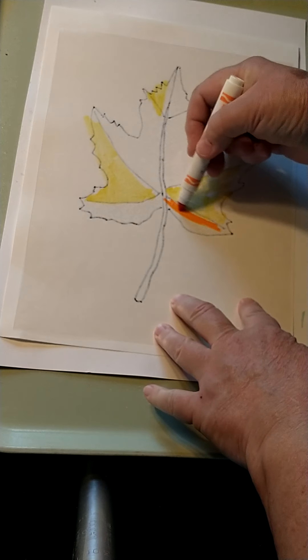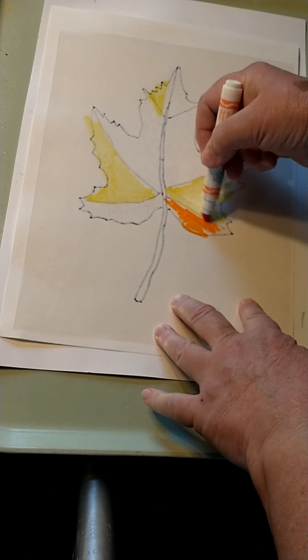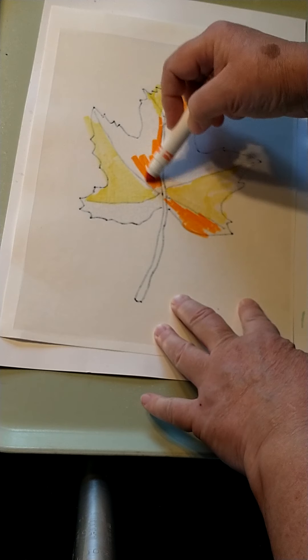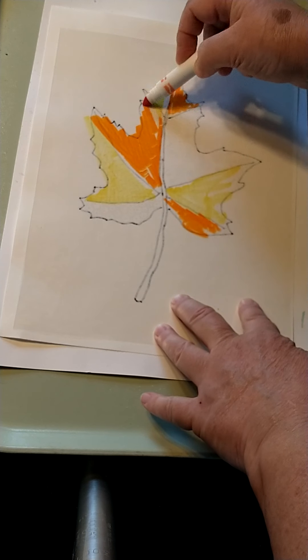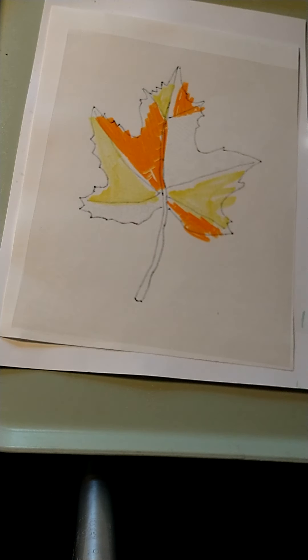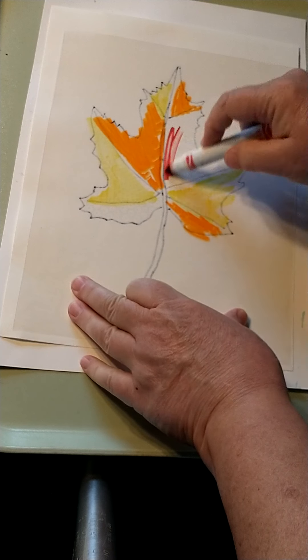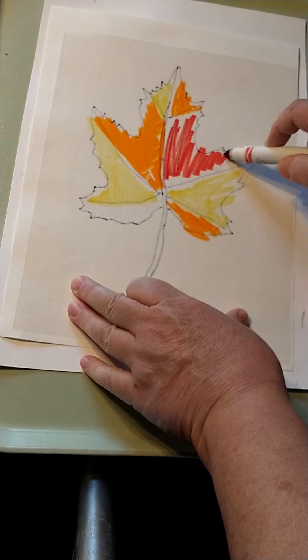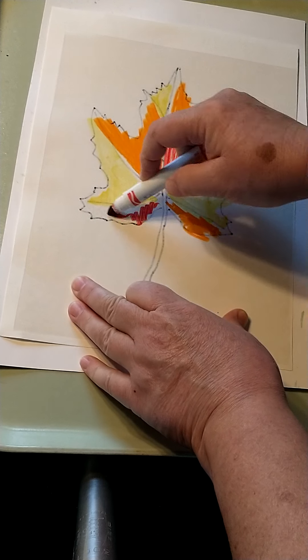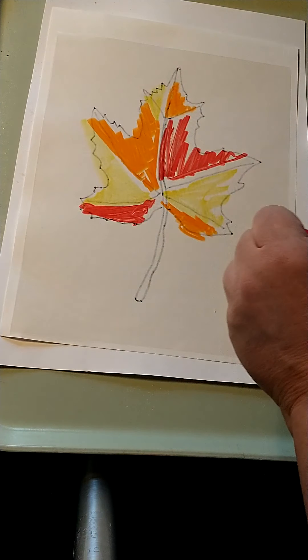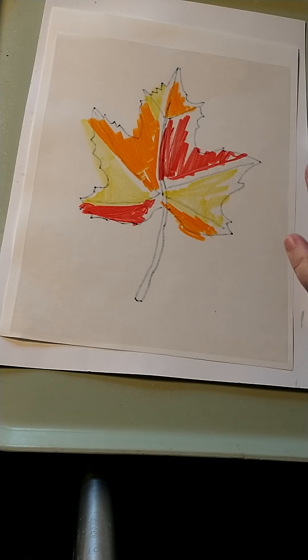Here's some orange. I'm going to use some red. And then I think I'll use a little bit of brown for the stem.